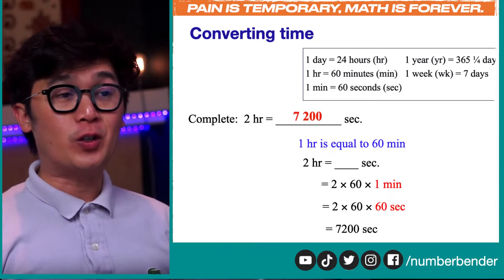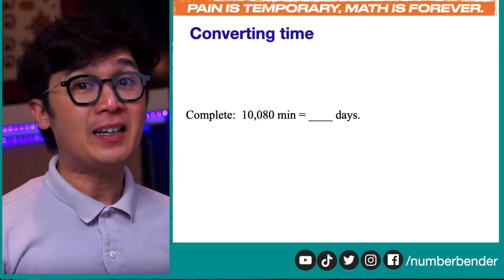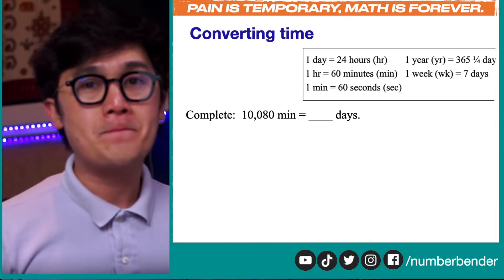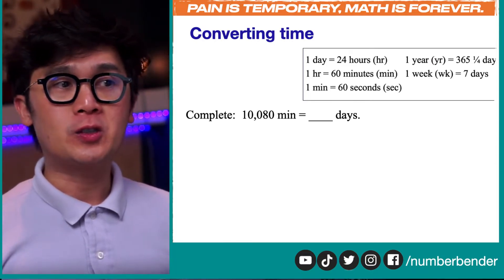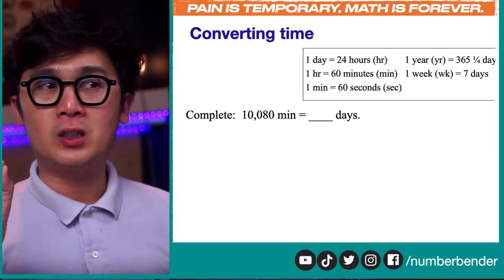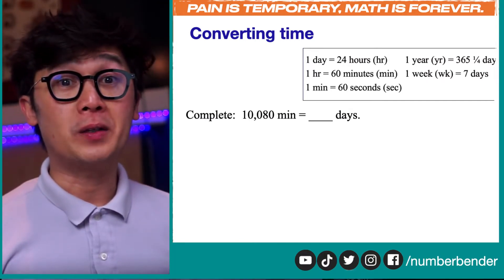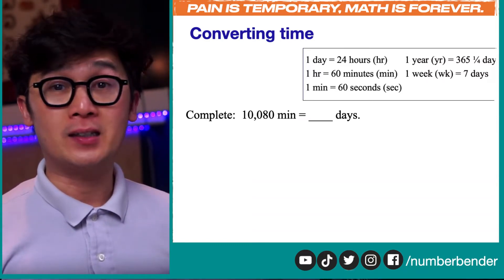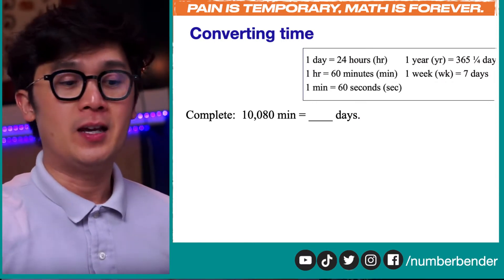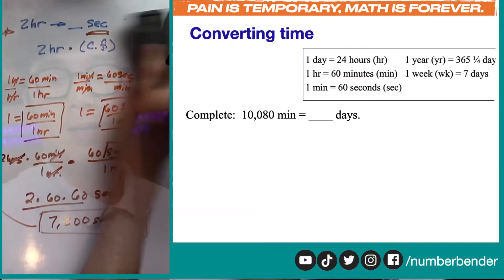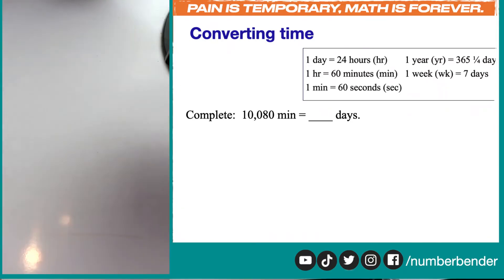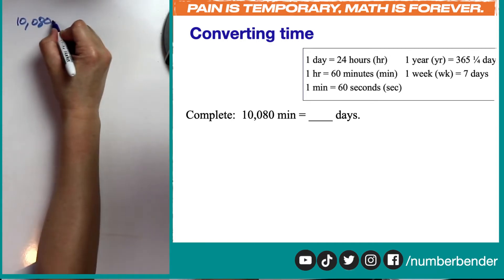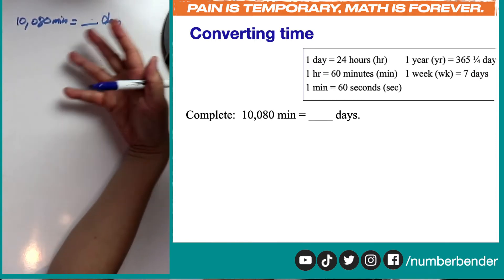So that gives us 7,200 seconds for two hours. Now let's use this technique again for 10,080 minutes — let's convert it into days. Looking at the cheat sheet, to go from minutes to days we can use day-to-hours and hours-to-minutes. That means we're going to be using two conversion factors to convert 10,080 minutes into a number of days. Let's start again with our format: we're converting 10,080 minutes into some number of days.